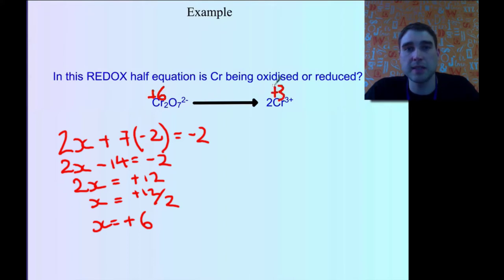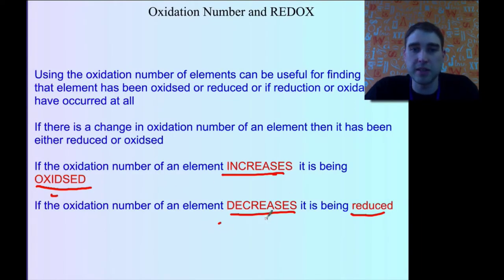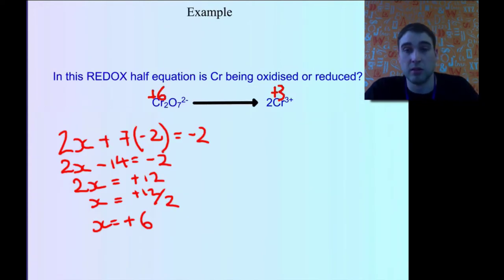We've gone from plus 6 to plus 3. That means the oxidation number has decreased. The oxidation number has decreased, which means the chromium has been reduced in that case.